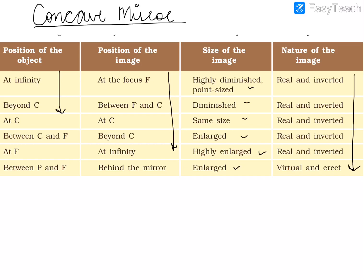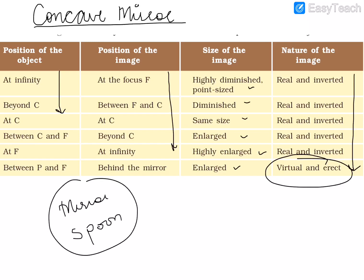The nature of the image also changes. You will get one image which will be virtual and erect — as observed when a concave mirror or spoon is placed very close to your face, or in a barber's shop where you see a highly enlarged image. In the case of a concave mirror, we get a virtual and erect image if the object is placed very close to the mirror. Other than that, the image formed is always real and inverted.